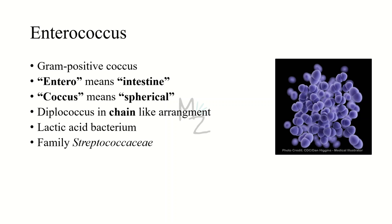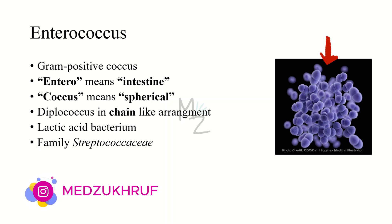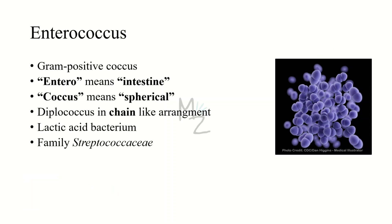Enterococcus is a gram-positive coccus. Entero means intestine and coccus means spherical. This is a diplococcus occurring in chain-like arrangement, as you can see in this picture where these cocci are forming chains. This is actually the vancomycin resistant enterococci, which we'll touch upon later. This organism is also called a lactic acid bacterium and it belongs to the family Streptococcaceae.